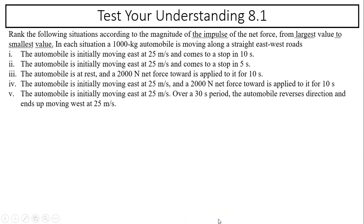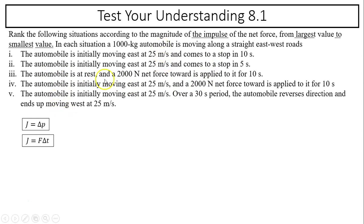Last question — test your understanding. Rank the following situations according to the magnitude of impulse from largest to smallest. In each situation, a 1,000 kg automobile moves along a straight east-west road. Impulse equals change in momentum, and also equals force times time. For situations one and two you are given initial and final velocities, so you calculate delta p. For situation three you are given force and time. After calculating, the answer is: largest is 5, then 1 and 2 are equal, then 3 and 4 are equal.